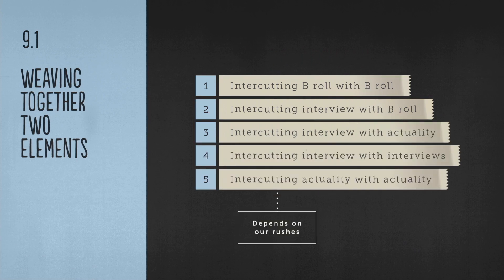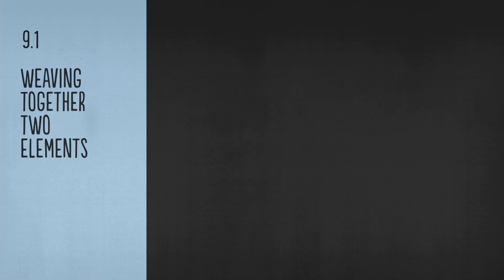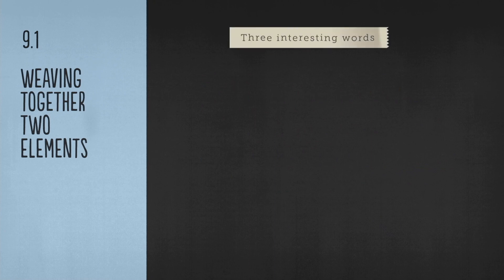These are five main ways that we can use intercutting to great effect when structuring our scenes. Of course, it depends on what we've got in our rushes and what our intended purpose of the scene is. Intercutting serves many purposes, which we'll be looking at in detail over the course of this chapter. But before we finish this tutorial, let's introduce three words that are so applicable to many of the main types of intercutting.